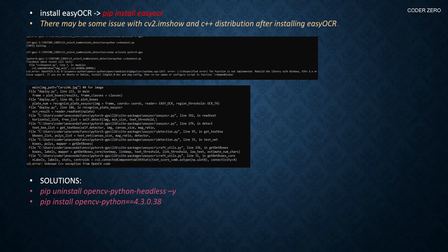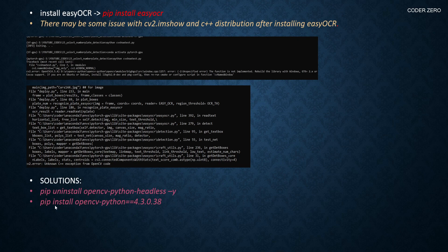After installing EasyOCR I was facing some issues with cv2.imshow and some C++ distribution errors. After searching the net and going through many articles, I found this solution. The cv2.imshow issue is because of opencv-python-headless, and the C++ issue is because of the 4.5 version of OpenCV. If you face these issues, run 'pip uninstall opencv-python-headless' and then 'pip install opencv-python==4.3.0.38' and you won't be facing any issues.